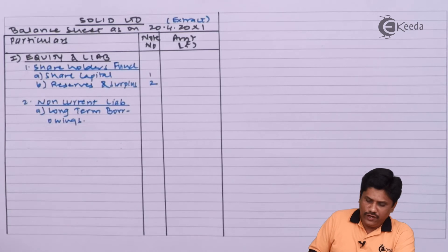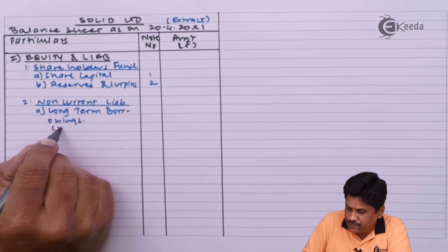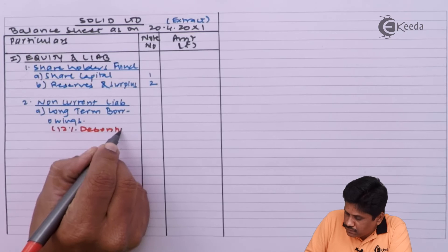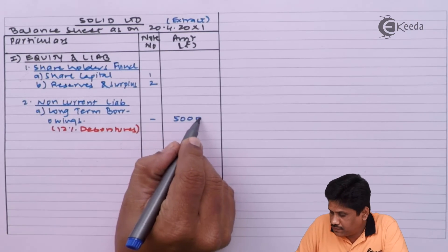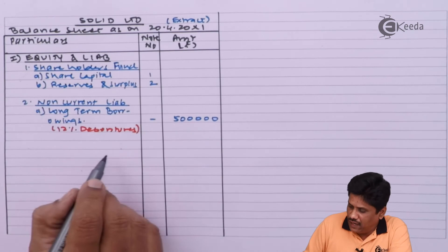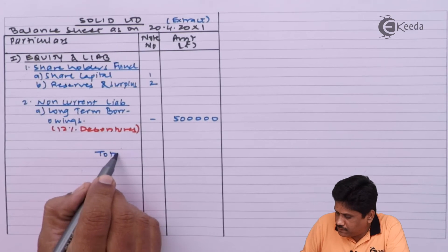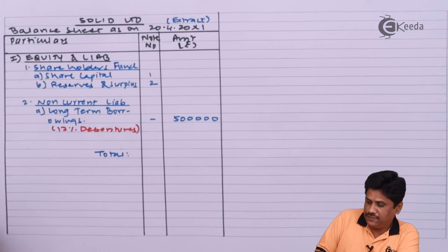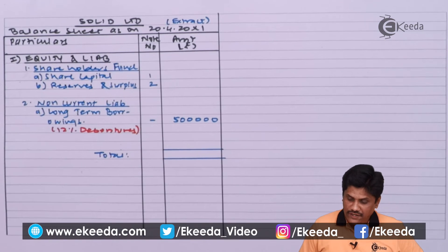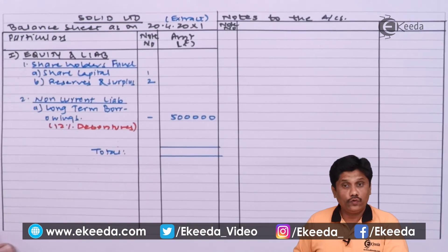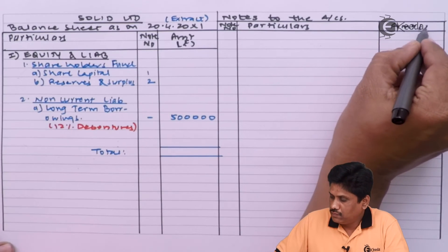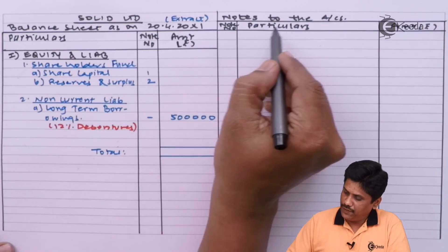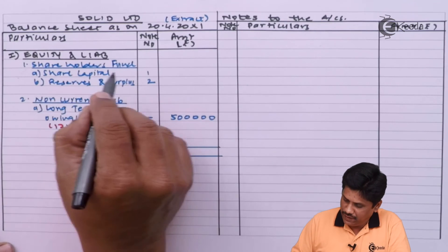For long-term borrowings we have only one item so I will write it in brackets only: 12% Debentures, amount is ₹5,00,000. Then we take a total of whatever amount is available. Now I need to prepare the notes to the balance sheet — Notes to Accounts. Note Number 1 will be drawn for Share Capital, with columns for Particulars and Amount.